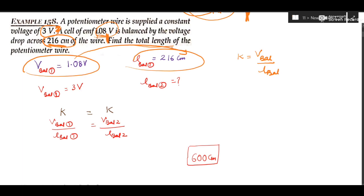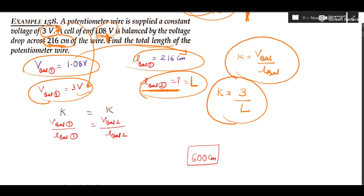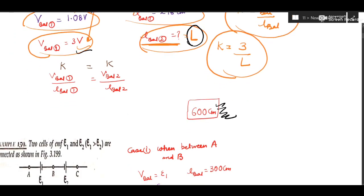Now the question asks for the total length of the potentiometer wire. If the total length is used as the balancing length, then the balancing voltage will be E of the driver cell — 3 volt. So 3 volt is to be balanced against total length L. Equate the two values of K and find capital L, the length of the whole wire. The answer comes out as 600 centimeter.